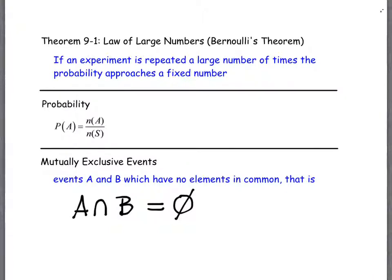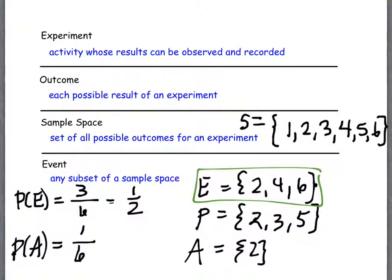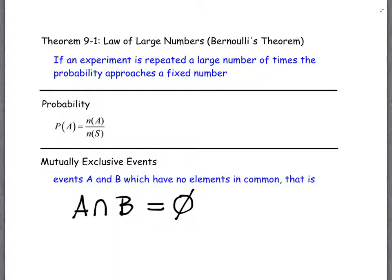So for those of you who have seen this notation before, this means something to you. These are two different sets. In this case, they're two different events. And this is the intersection of those events. And what we're saying is that they can have nothing in common. This notation means empty set. It means they have nothing in common. There's nothing that they overlap in.